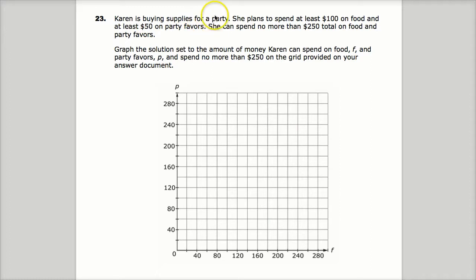Karen is buying supplies for a party. She plans to spend at least $100 on food, and at least $50 on party favors. She can spend no more than a total of $250 on food and party favors. So that's her budget, it's $250. Graph a solution set to the amount of money Karen can spend on food and party favors, and spend no more than $250. So we're going to make one statement about food, we're going to make one statement about party favors, and we're going to make one statement about the maximum amount that we're allowed to spend.